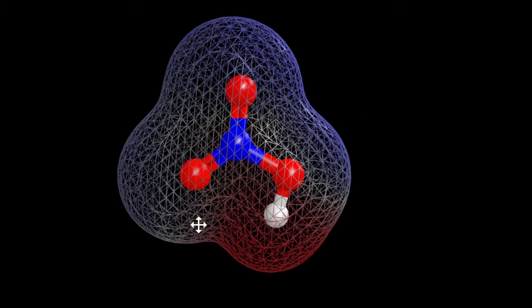So when we look at this, we have a positive and a negative side. Those are poles. That means that HNO3 is a polar molecule.